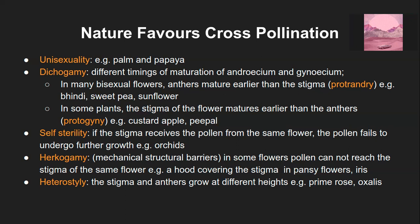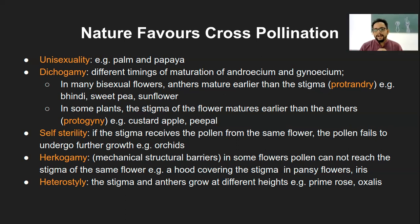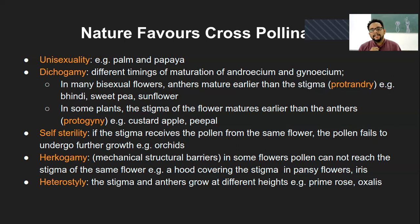Those were the two conditions of dichogamy: protandry and protogyny. Apart from unisexuality and dichogamy, there is a third factor that favors cross-pollination — self-sterility.